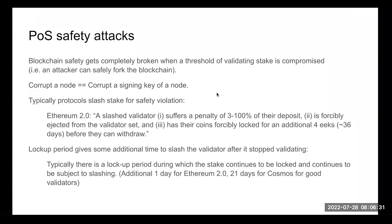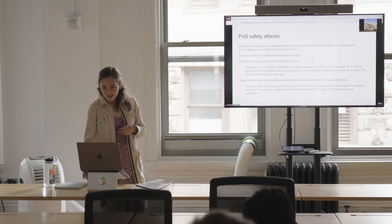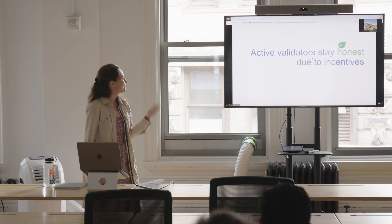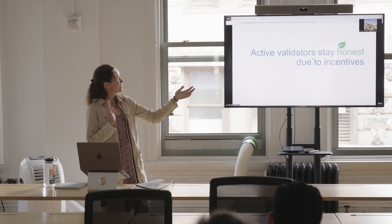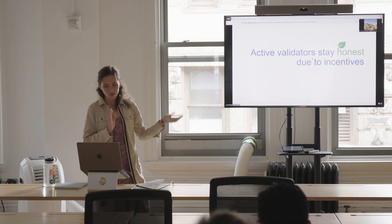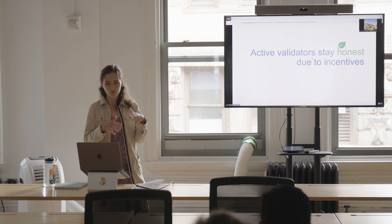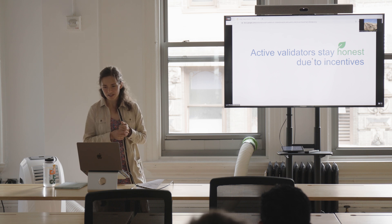The remainder of a slashed validator's coins are locked for 36 days before they can withdraw. Validators have really strong incentives to stay honest while they're validating. There's also a lockup period after they stop validating to ensure time to collect evidence and slash their stake. Lockup periods vary: for Ethereum it's one day, for Cosmos it's 21 days. The high-level idea is that active validators stay honest due to incentives if the protocol is designed well.